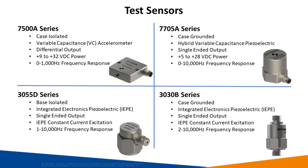For this test, four sensors were selected. The 7500 series is a case isolated variable capacitance accelerometer. This unit has a differential output and requires an excitation of 9 volts to 32 volts DC. It has a frequency response from 0 Hz to 1 kHz. The 3055 series is a base isolated integrated electronic piezoelectric accelerometer. It has a single-ended output and requires an IEPE constant current excitation. It has a frequency response from 1 Hz to 10 kHz.